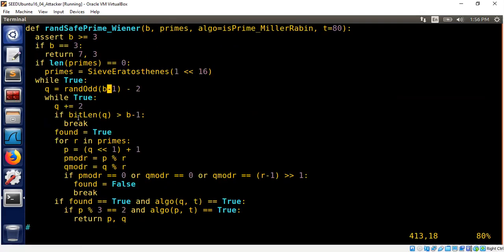Let me explain the algorithm now. The random safe prime Wiener takes a couple of arguments. The B is the bit size of your prime P. And the primes is the list of primes you have from Sieve of Eratosthenes, for example. And then these arguments are related to Miller-Rabin, which we discussed earlier.